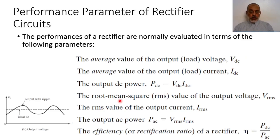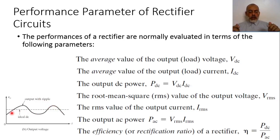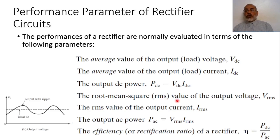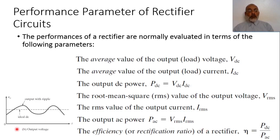On the other hand, the root mean squared value of the voltage would be V root mean squared. To compute it, instead of taking the integration of the signal itself, we take the square of the signal, then take the average of this square, and then take the square root. This gives V root mean squared. Similarly, the root mean squared value of the output current is I root mean squared. The corresponding AC power is V root mean squared multiplied by I root mean squared.